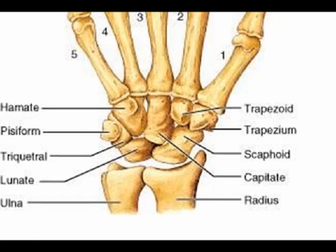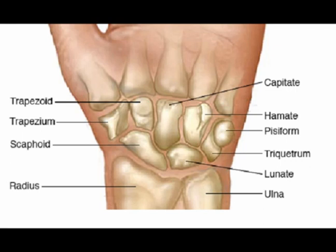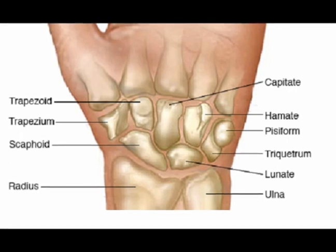The carpal bones are the bones of the wrist that connect the distal aspects of the radius and ulna of the forearm to the basis of the five metacarpal bones of the hand. There are eight carpal bones in two rows of four: the proximal row and the distal row.